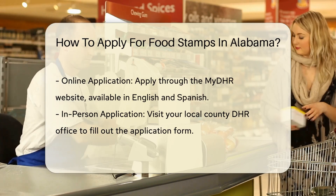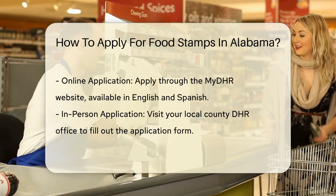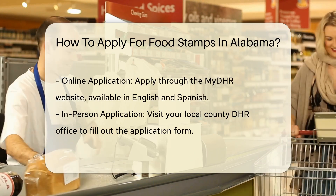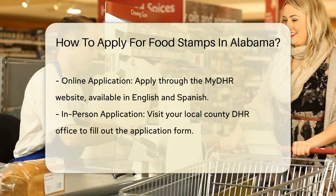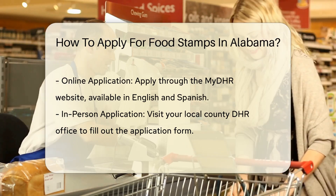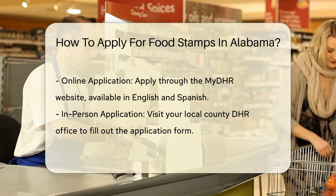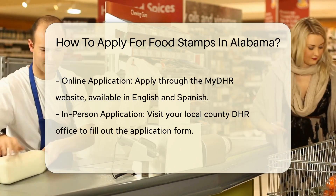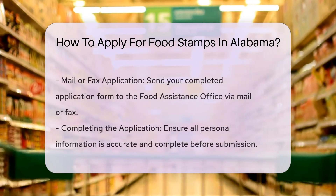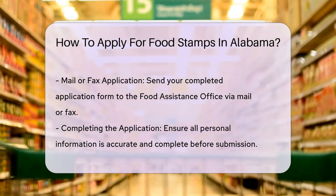Choose an application method. You can apply for SNAP benefits in several ways. Online: you can apply by visiting the MyDHR website and creating an account — this option is available in English and Spanish. In person: visit your local county DHR office to fill out the application form. By mail or fax: you can also mail or fax the application form to the Food Assistance Office.